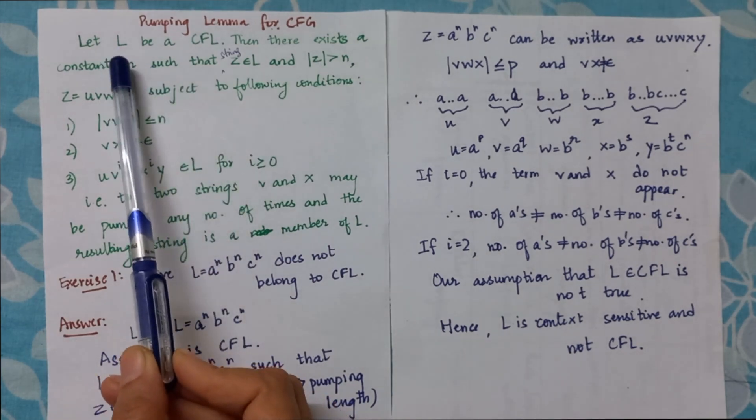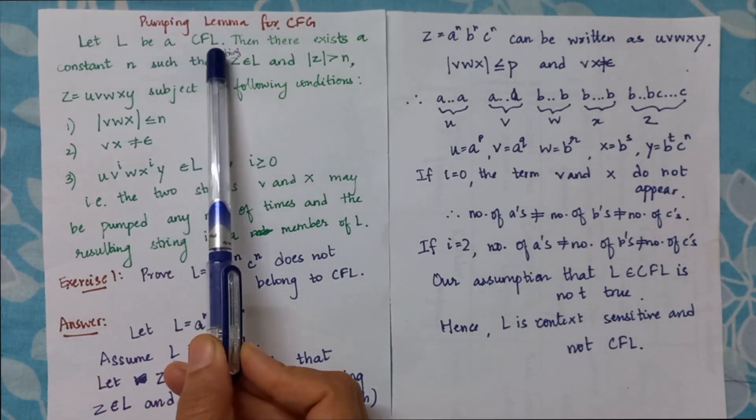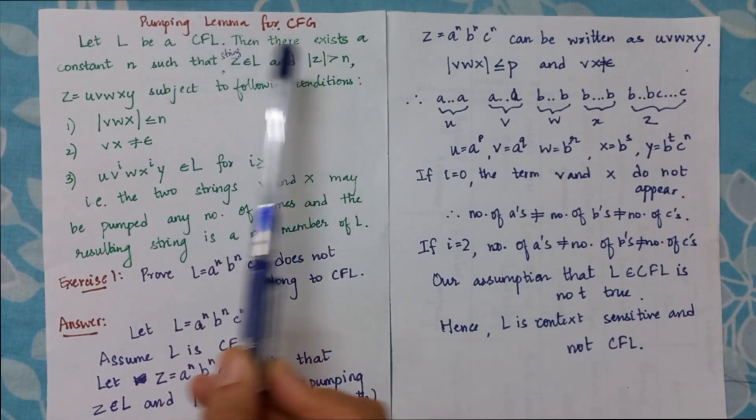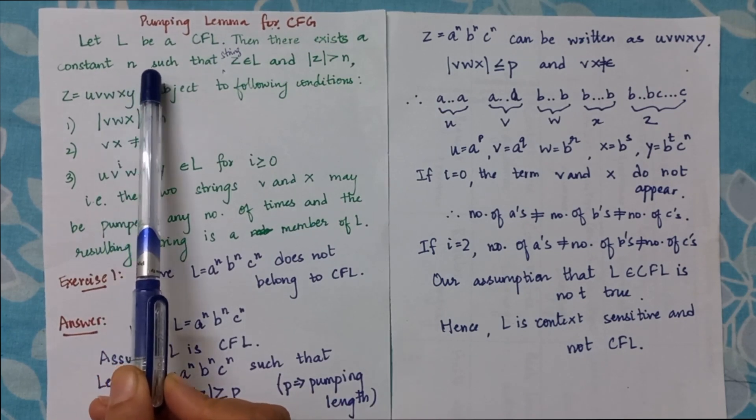Consider a particular language as a context-free language. Then in that case, there will be a constant n, which will be the pumping length.